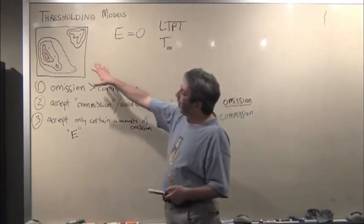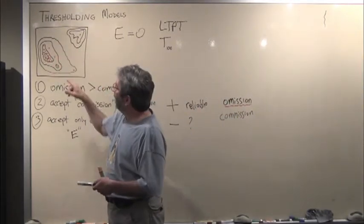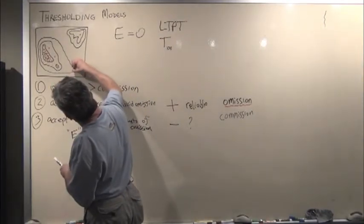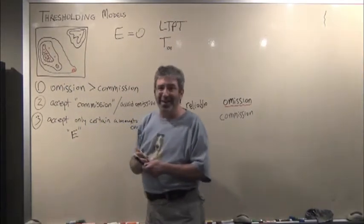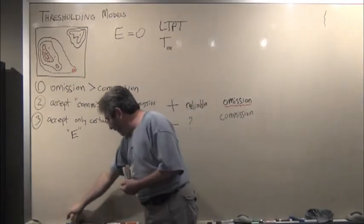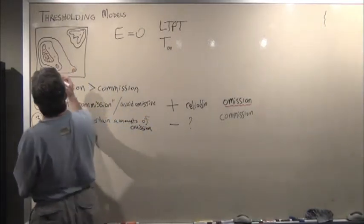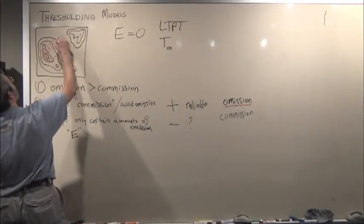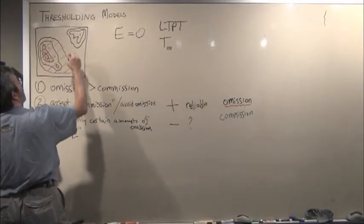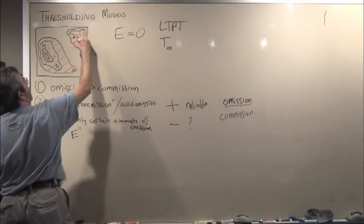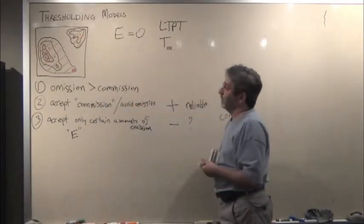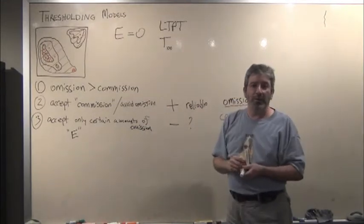If we had trained this model using these red points, the lowest level of suitability according to any of the training points is this one. In that situation we would be able to term all of this area as suitable. That's when E equals zero, so we use T 100.